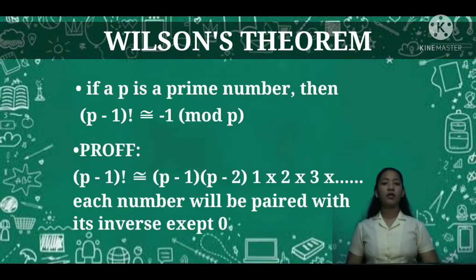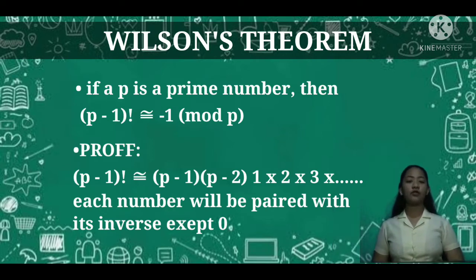To prove this, (p-1)! is congruent to (p-1)(p-2) × 1 × 2 × 3 and so on. To solve this, you have to pair each number with its inverse, except 0.